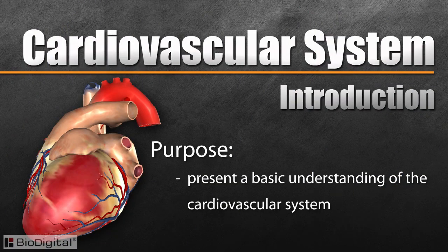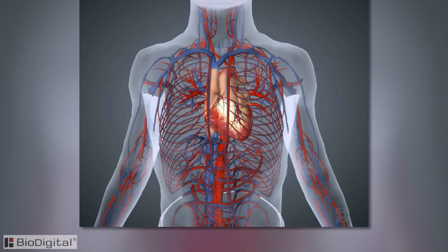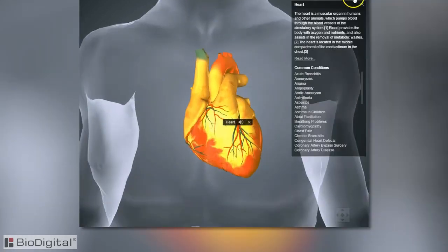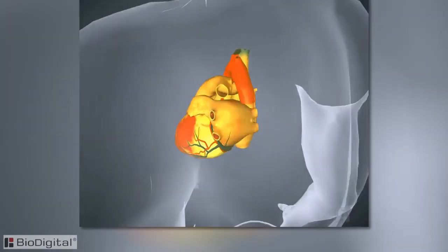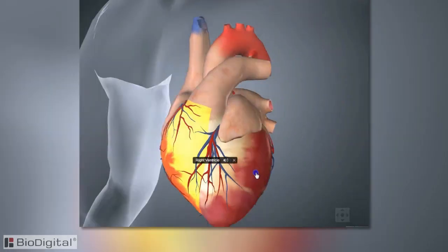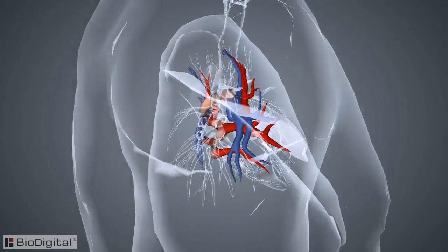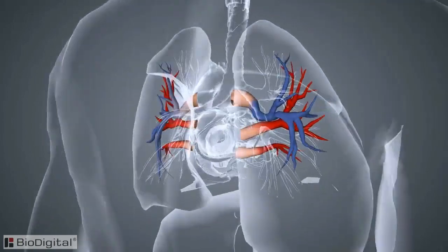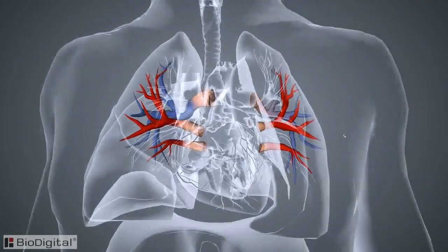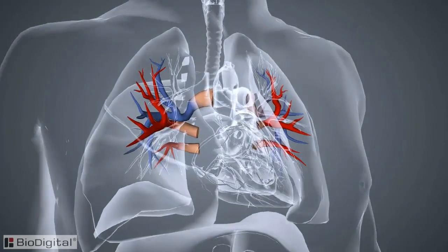The purpose of this video is to present a basic understanding of the cardiovascular system. A more in-depth study of the system will be presented in other CTE videos, where we will look into each specific part and function. The heart has two major circuits within the circulatory pathway which work together in a closed circulatory system.